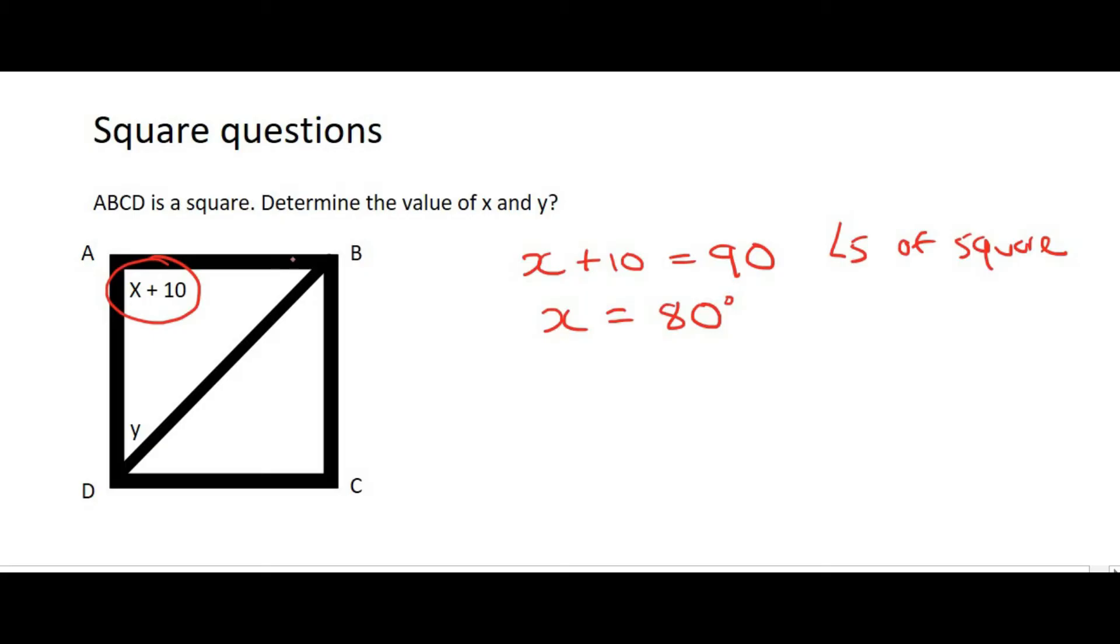And then we know that the diagonal of a square, so this line over here, cuts the corner angle exactly in half. And so, y will be 45 degrees. And the reason that you use there is diags, meaning diagonals, of square. Because that's what a diagonal of a square does. It cuts those in half.